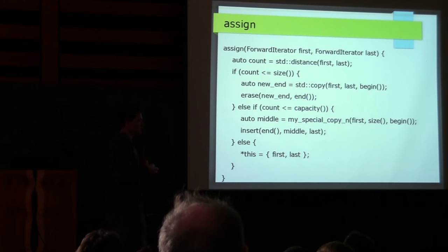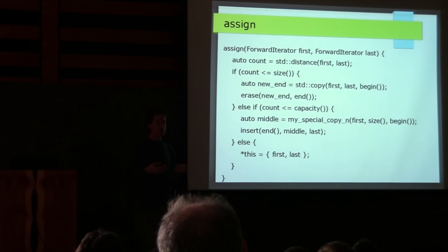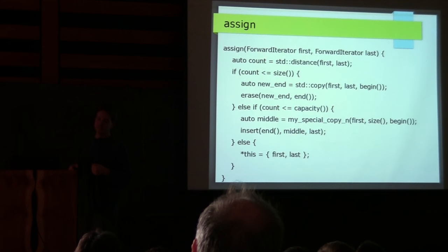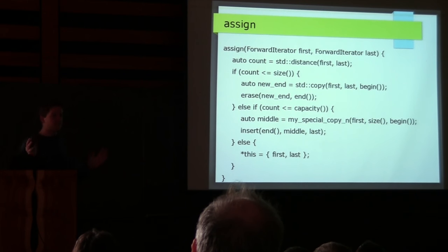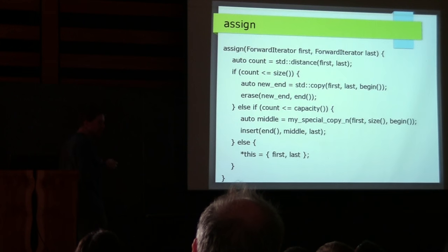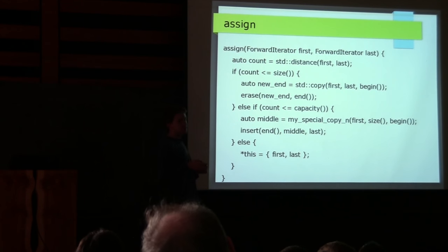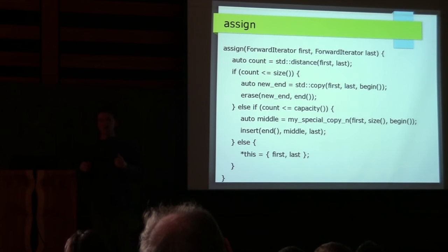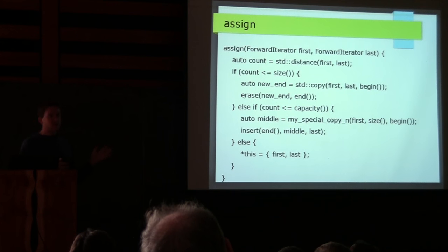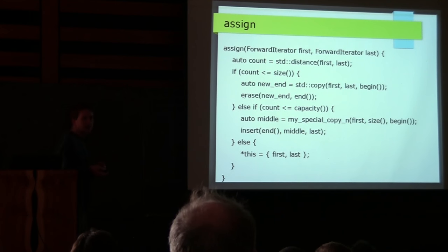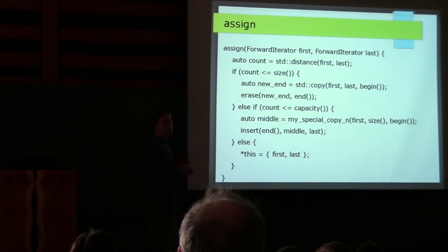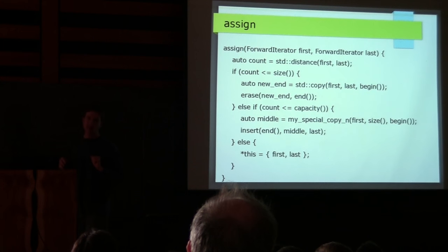That gives us a simpler standard library implementation. It also means that if a user wants to write their own container-like object — say, a static_vector backed by std::array with a fixed compile-time capacity that can grow and shrink within that capacity — they only write the nine or ten functions they need and get the rest of the standard library interface for free. They don't have to think about all the implementation details we went through — it just works.